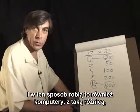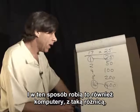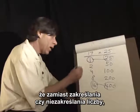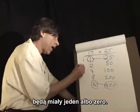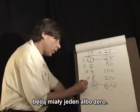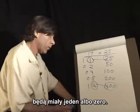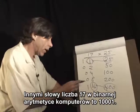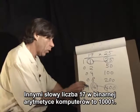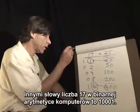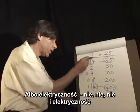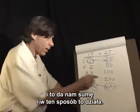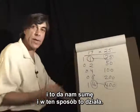And this is how computers do it as well, except instead of circling or not circling a number, they would have a one or a zero. So in other words, the number 17 in binary arithmetic is 1, 0, 0, 0, 1 — or electricity, no, no, no, and electricity. And that will give us the sum. And that's how this works.